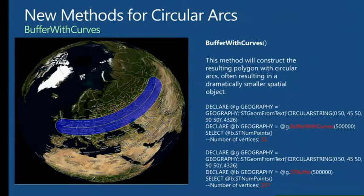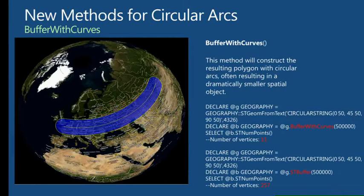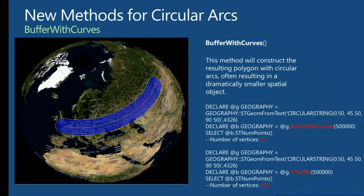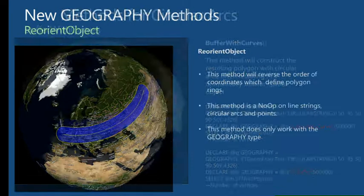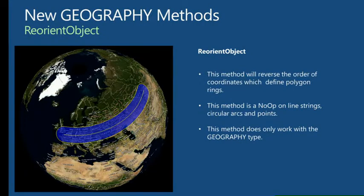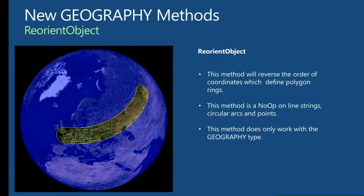We also have a new method that allows us to basically reorient the shape we have. I have a line string that goes over Europe into Russia and I put a buffer around it with curves — instead of having lots of small dots, each endpoint is basically a circular arc segment. If I want to reorient it and say I didn't mean to show everything across Europe but actually want to show the inverse of it, we now have the reorient method that gives us the ability to select everything outside that corresponding area. We will see an interesting example in one of the demos coming up to make use of that.